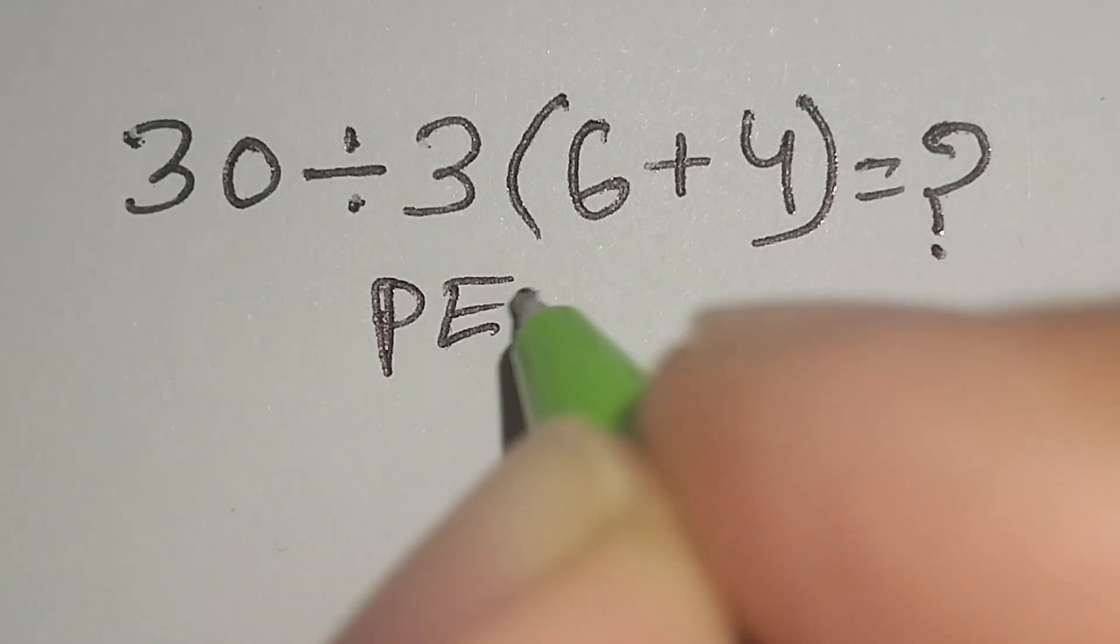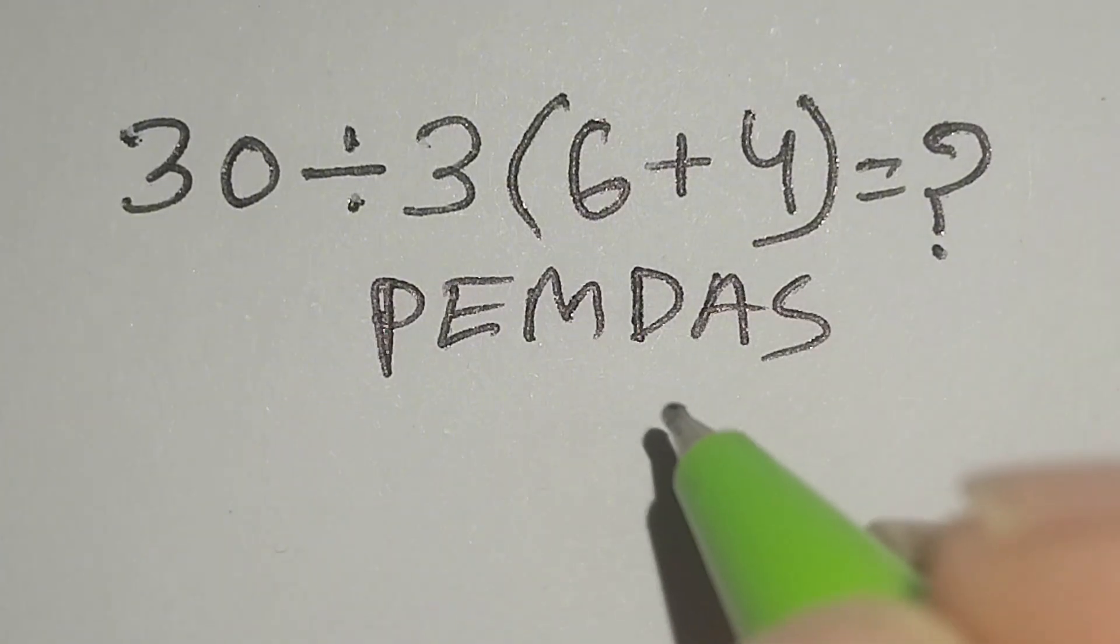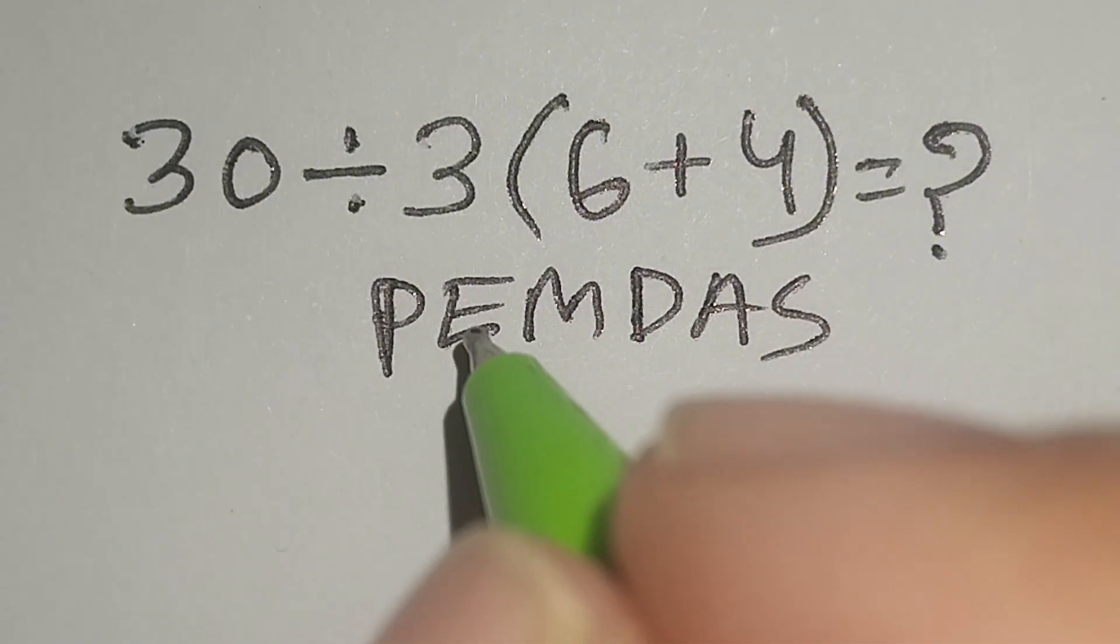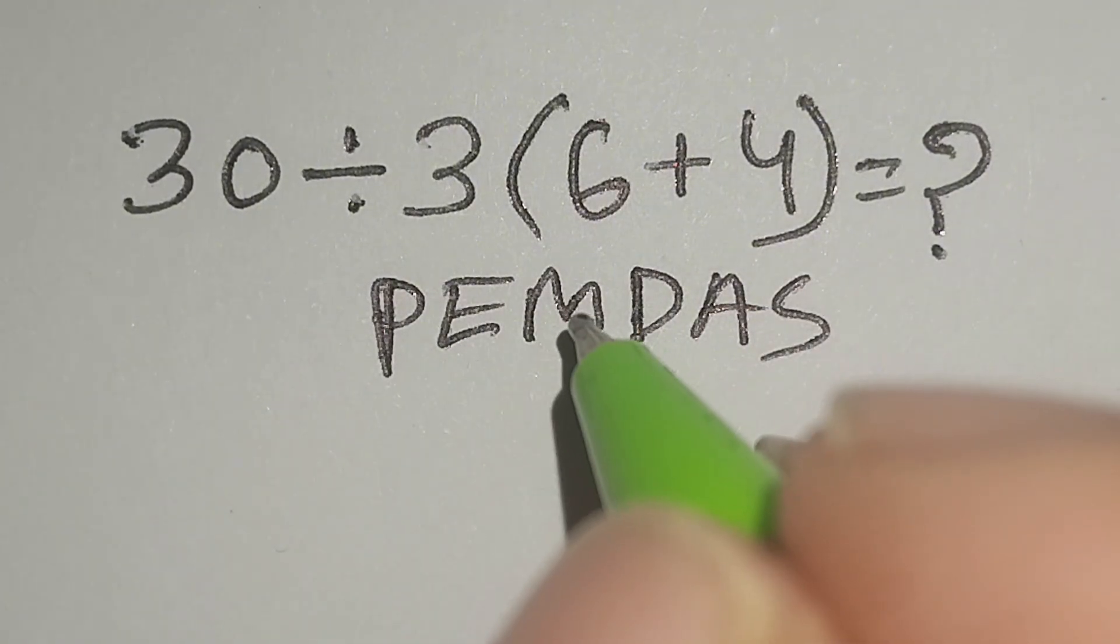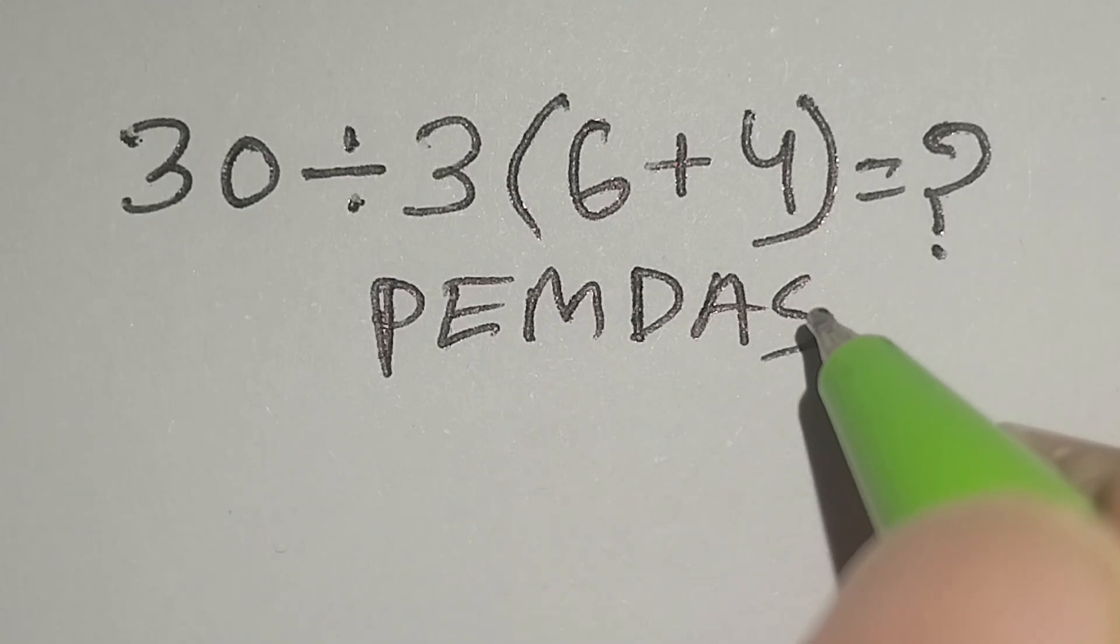PEMDAS: P for parenthesis, E for exponent, M for multiplication, D for division, A for addition, S for subtraction.